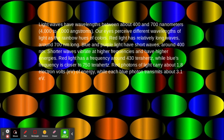Red light has a frequency around 430 terahertz while blue frequency is closer to 700 terahertz. Red photons carry about 1.8 electron volts of energy while each blue photon transmits about 3.1 eV.